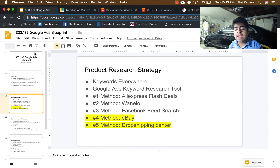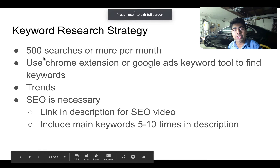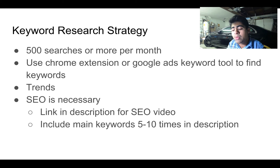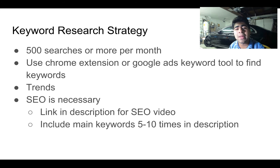Method three is Facebook feed search — I've made a lot of videos on that, so I'm not going to cover it here again. The same goes for eBay and the drop-shipping center — I made videos on those specifically. I'll have the links for all of those in the description. Now, for keyword research: make sure you have over 500 searches per month for the product you're trying to sell, and use the Chrome extension or Google Ads Keyword Planner to find those specific keywords.